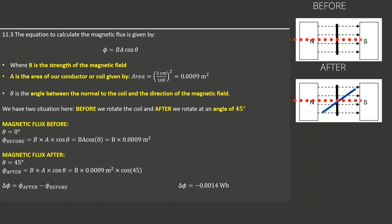After rotating the coil to 45 degrees, the magnetic flux is B × 0.0009 m² × cos(45°). Subtracting flux before rotation from flux after rotation gives the change in magnetic flux. We already know the change in magnetic flux from Question 11.2: it is negative 0.0014 weber.